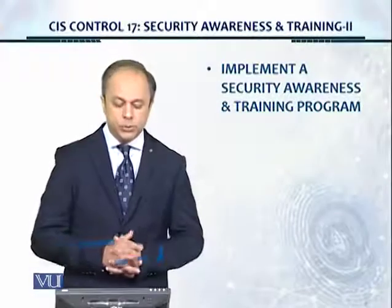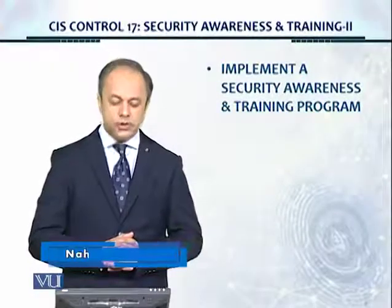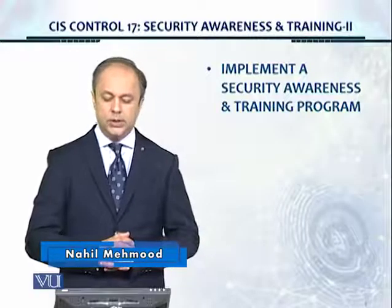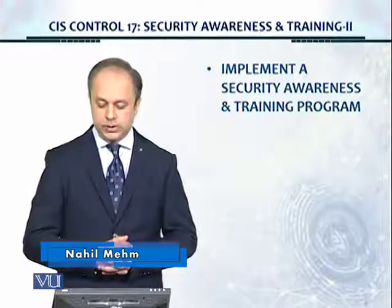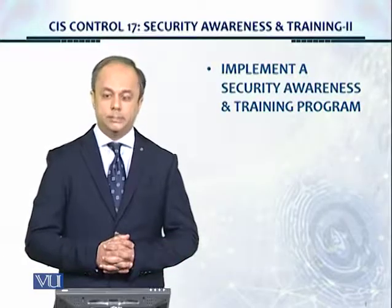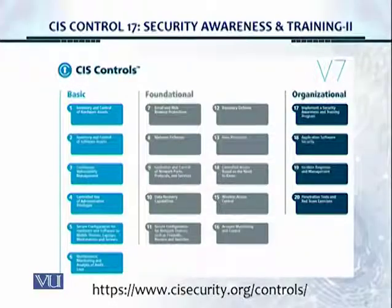Welcome. In this module, we're going to take a look at CIS Control number 17, Security Awareness and Training, and this is the second part of the series: Implement a Security Awareness and Training Program. This is the CIS Controls layout for version 7. We're now talking about the organizational controls, and we are now in the first of the organizational controls.